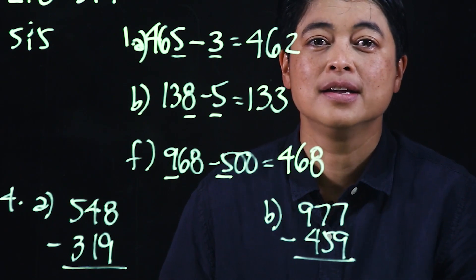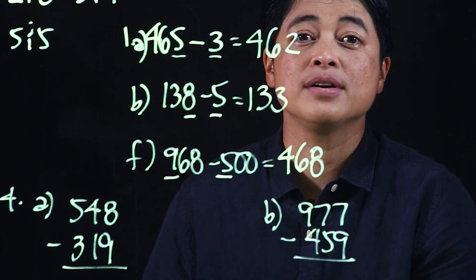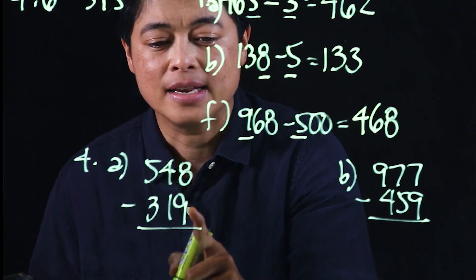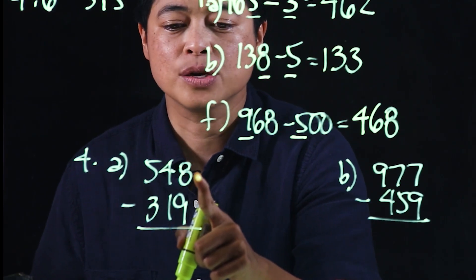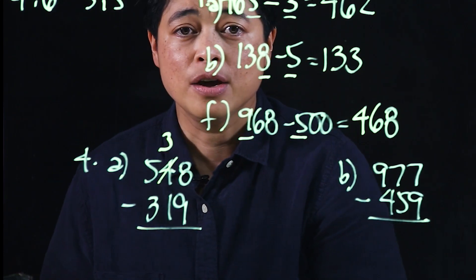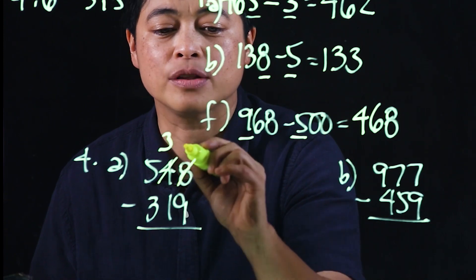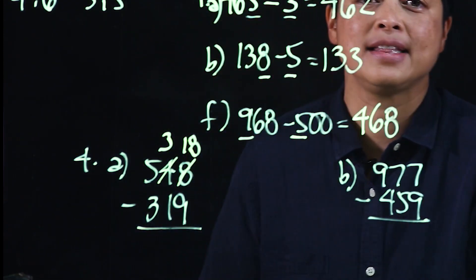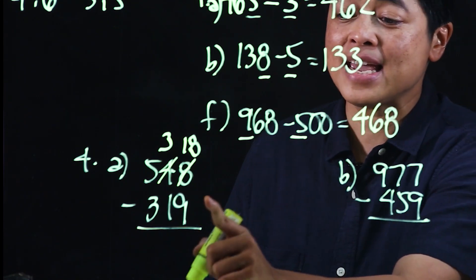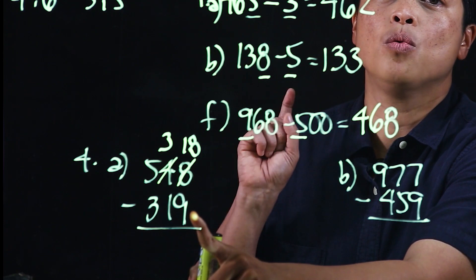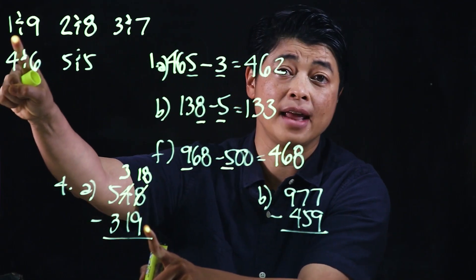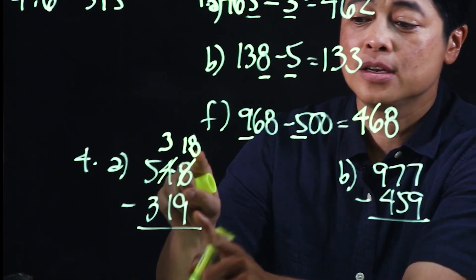For computational math, when it says regrouping, regrouping means we need to borrow — that's the term we used when we were younger. Here you clearly cannot take 9 away from 8, so we need to borrow, and this now becomes 3. That's why it's called regrouping — it's regrouped to make 18. Now if we subtract: 3 is from 9, we need one more to get to 10, and we have to get to 18.